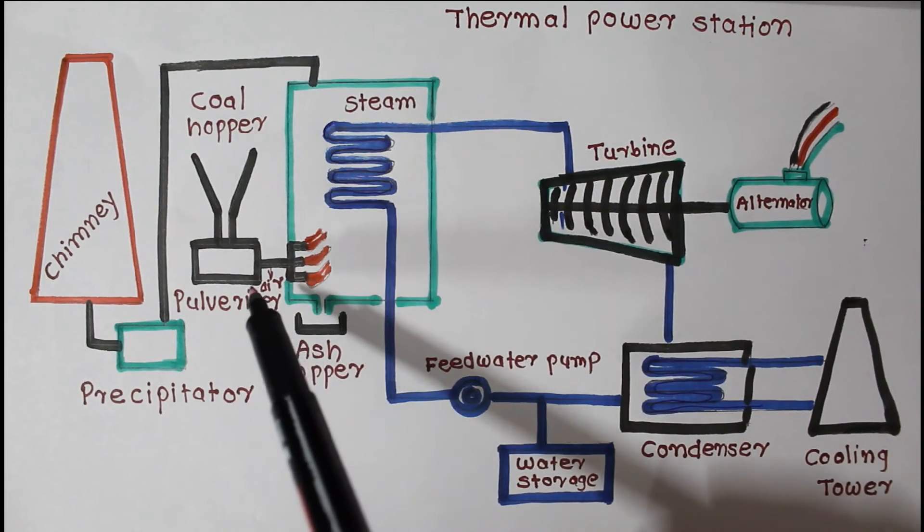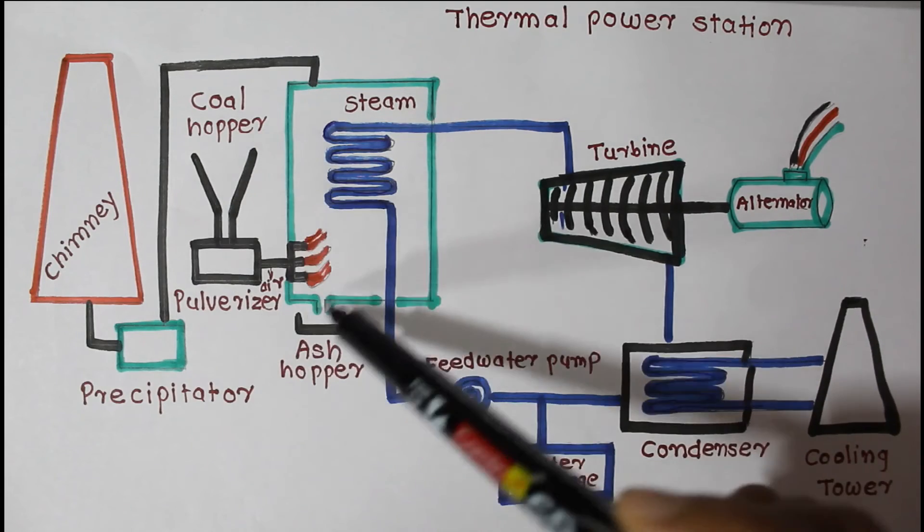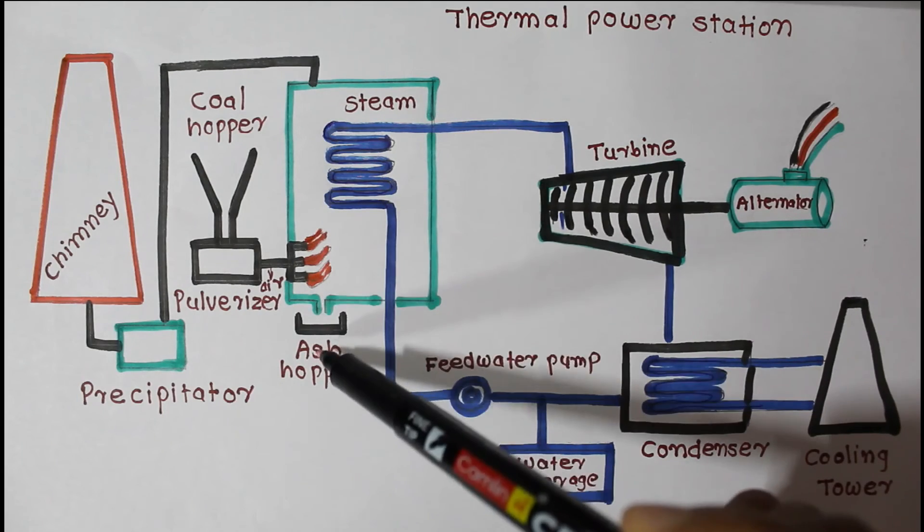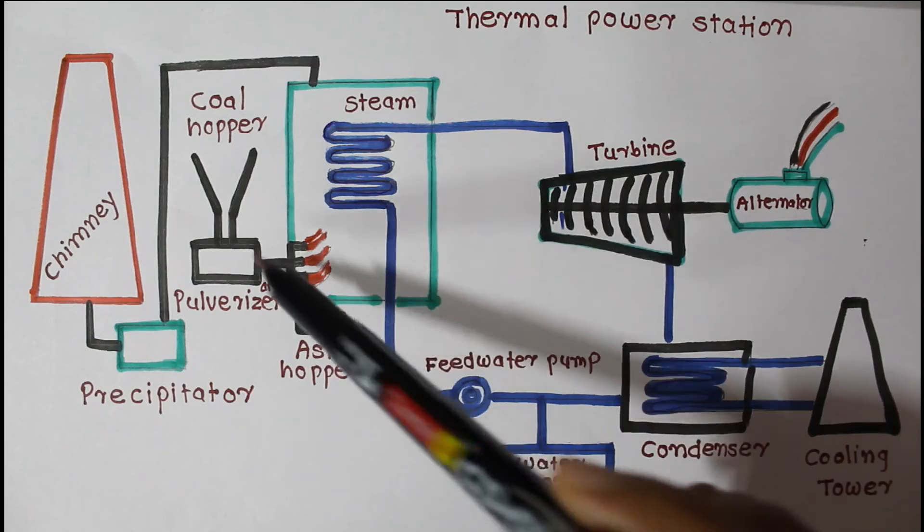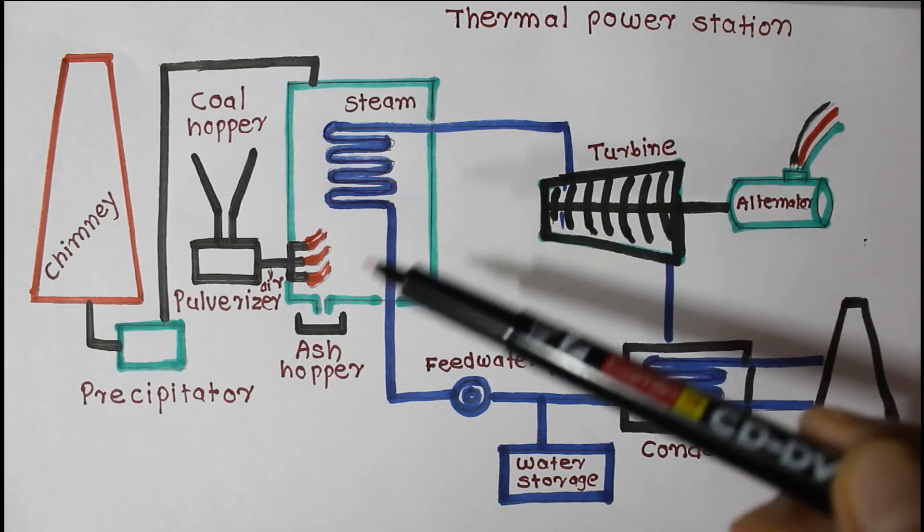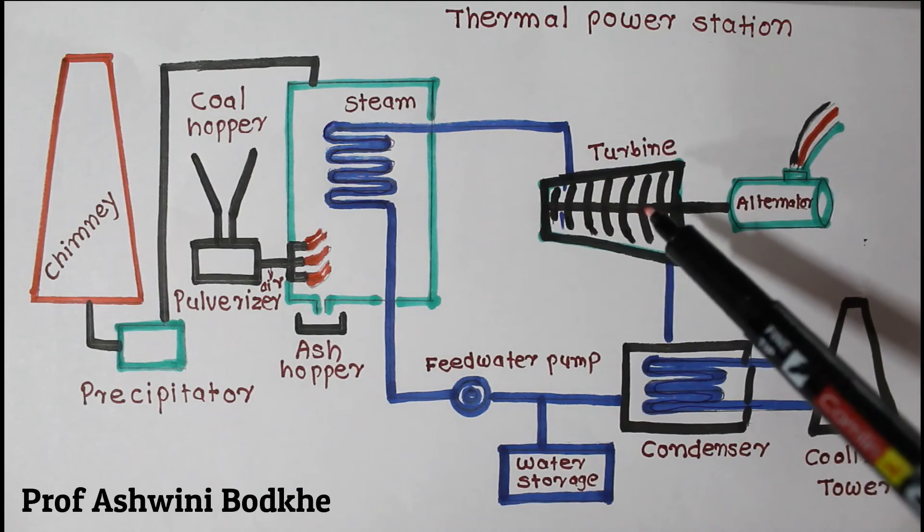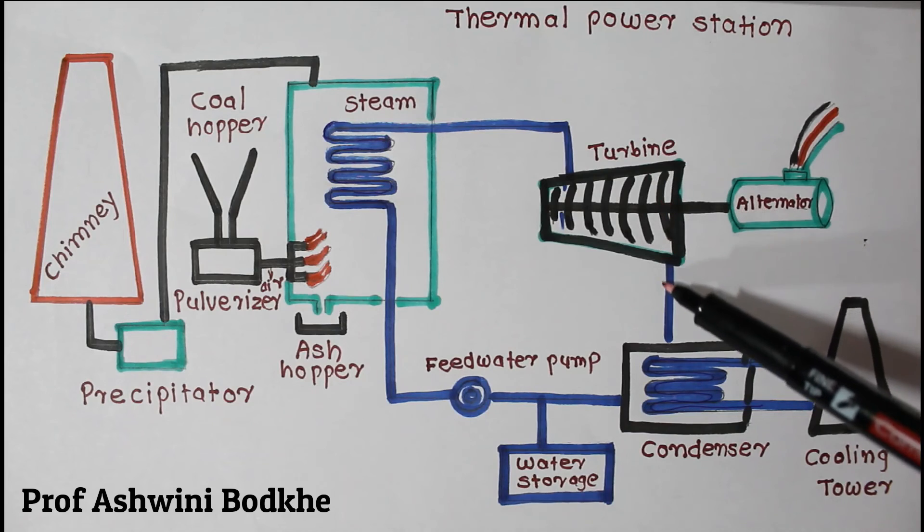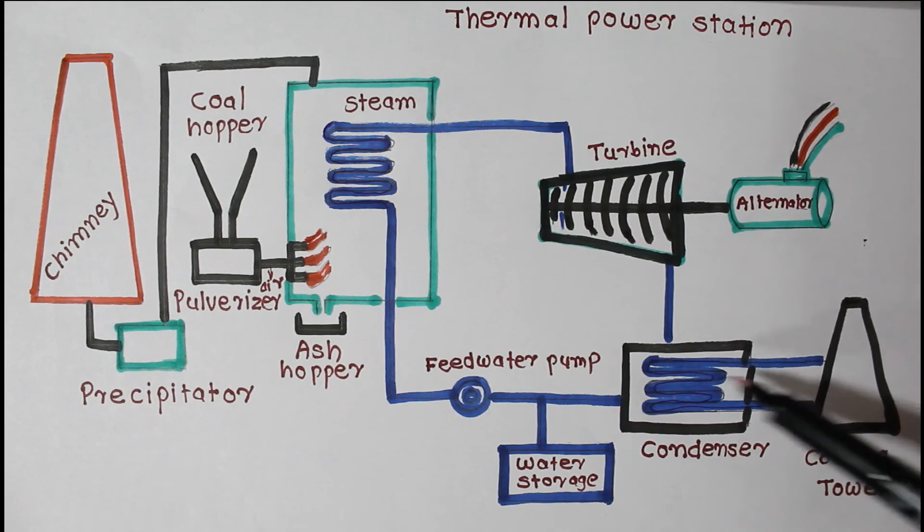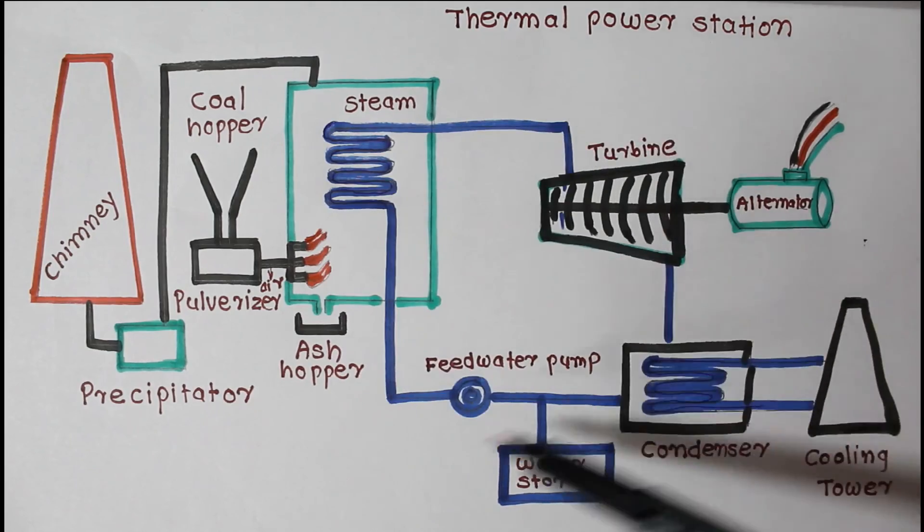Water is converted to steam with the help of coal. After burning this coal, wastage is removed from this hopper known as ash. With the help of steam, turbines rotate and electricity is produced. Water is removed from steam in condenser, and with the help of cooling tower we cool it, then we reuse this water again and the cycle goes on.